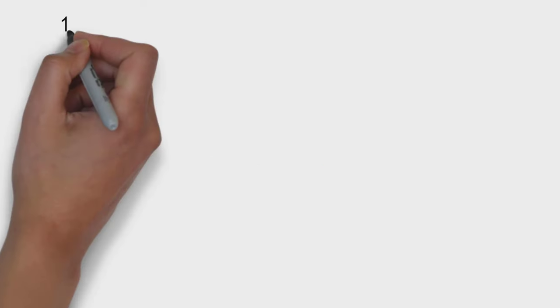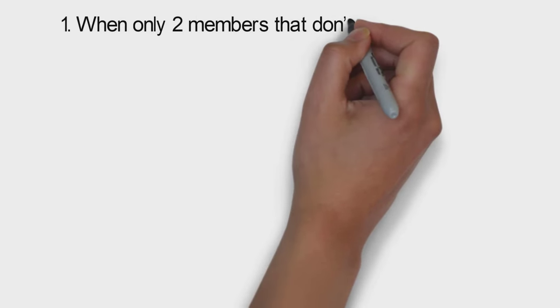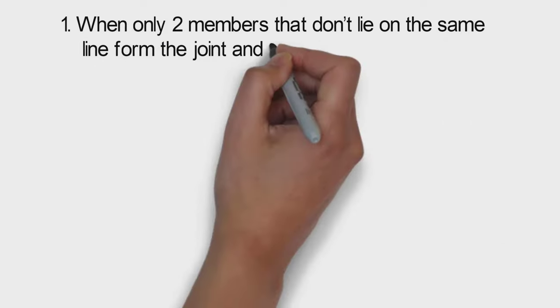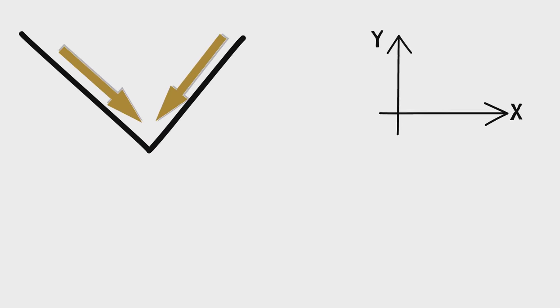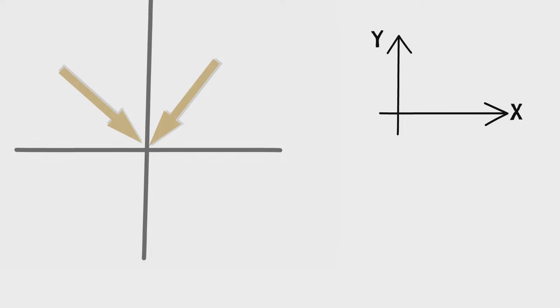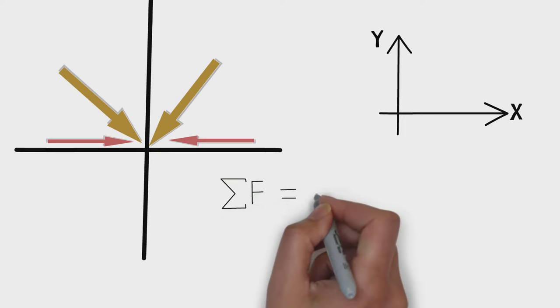There are two conditions for a member to be zero force. First is when only two members that don't lie on the same line form the joint and there is no external force, then they are zero force members. Remember, if they don't lie on the same line.